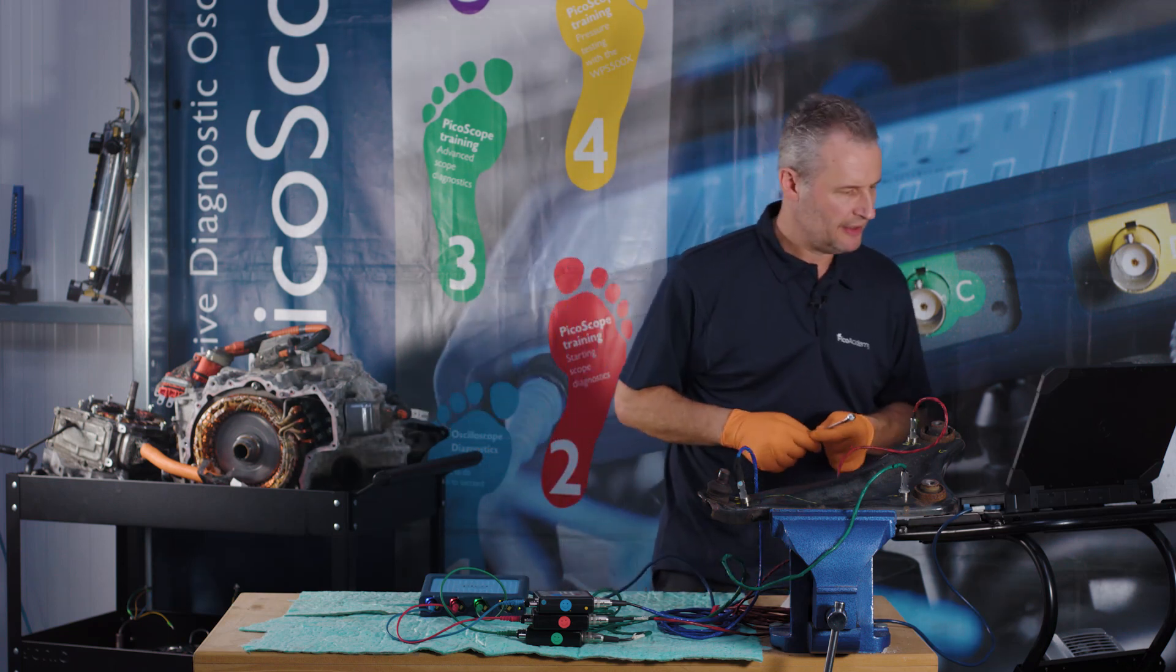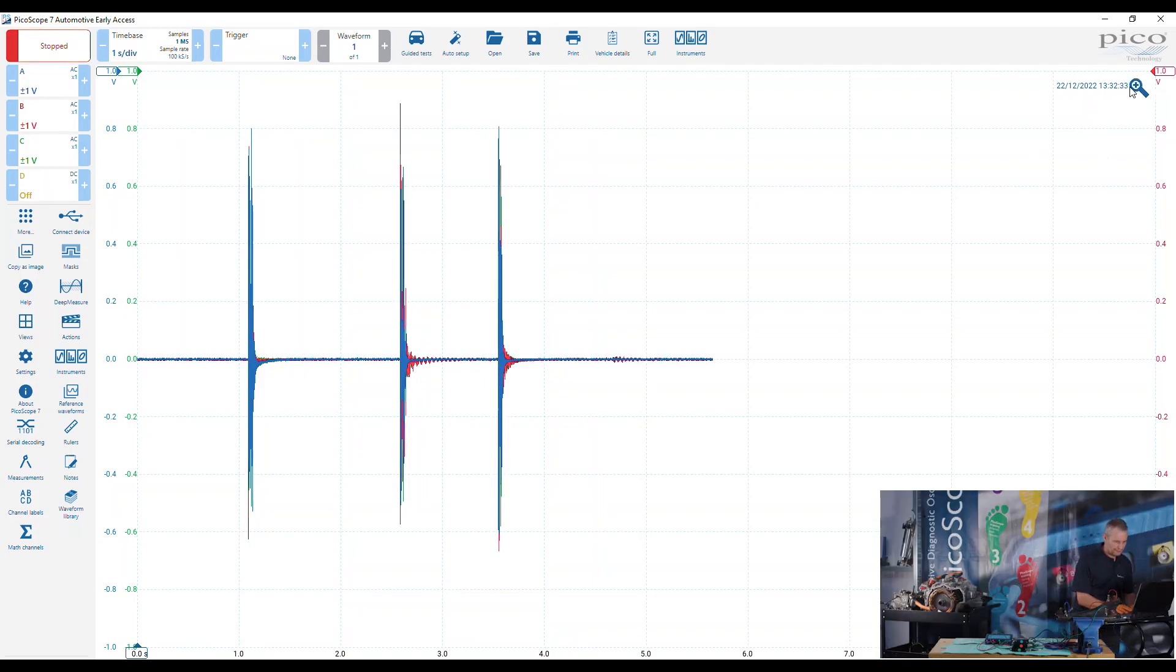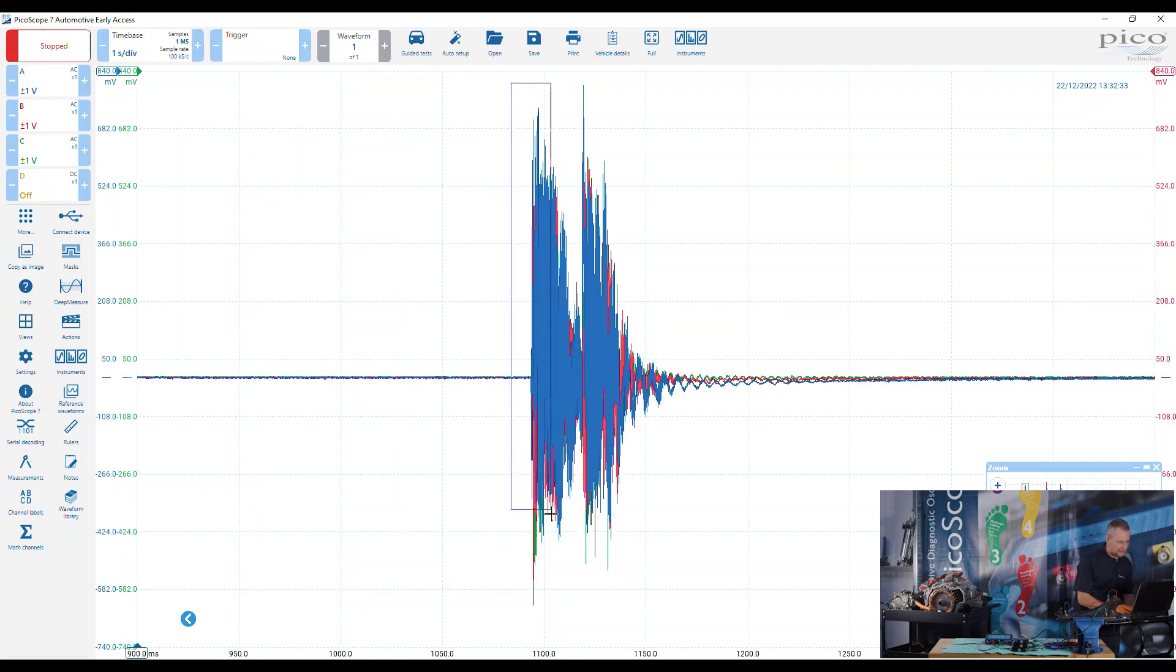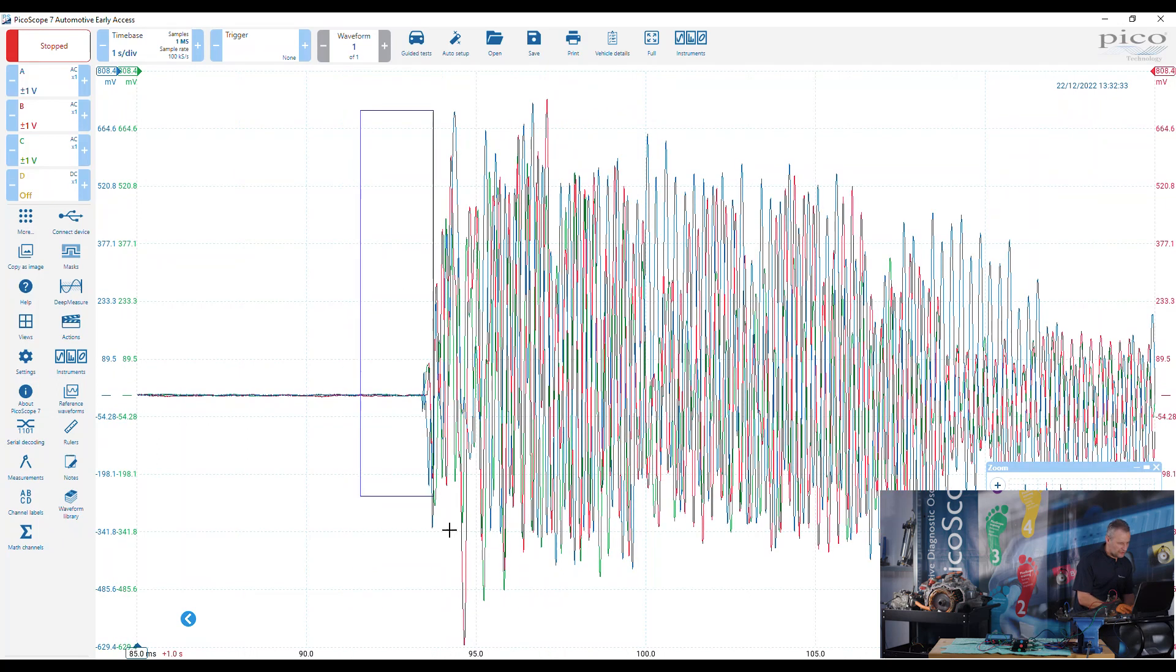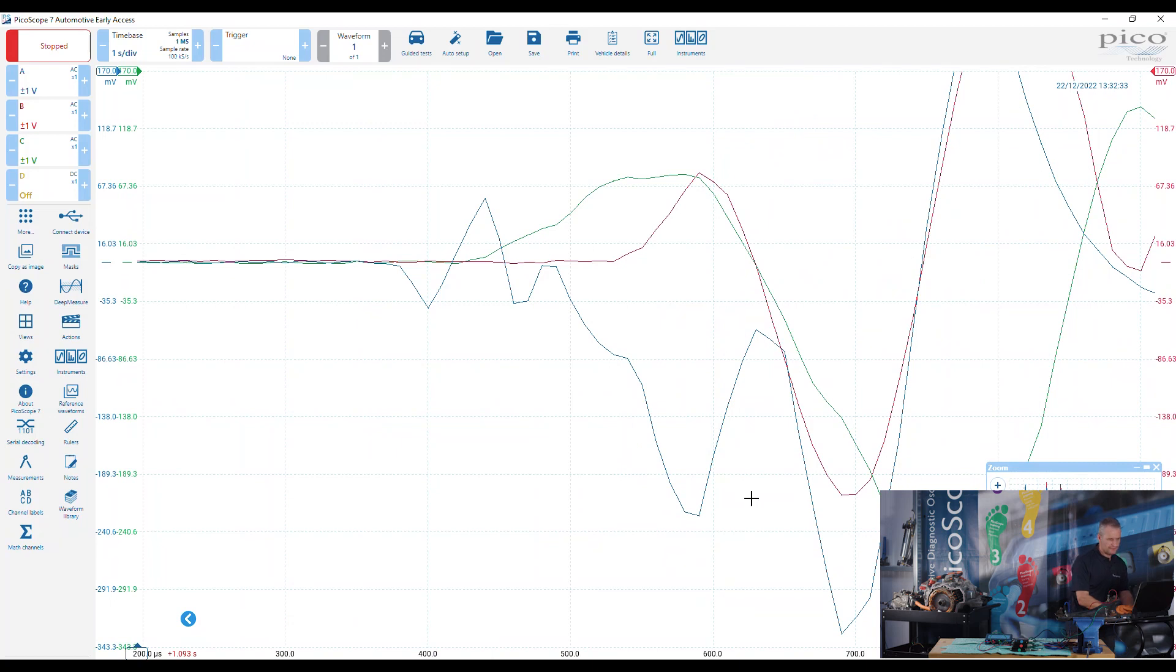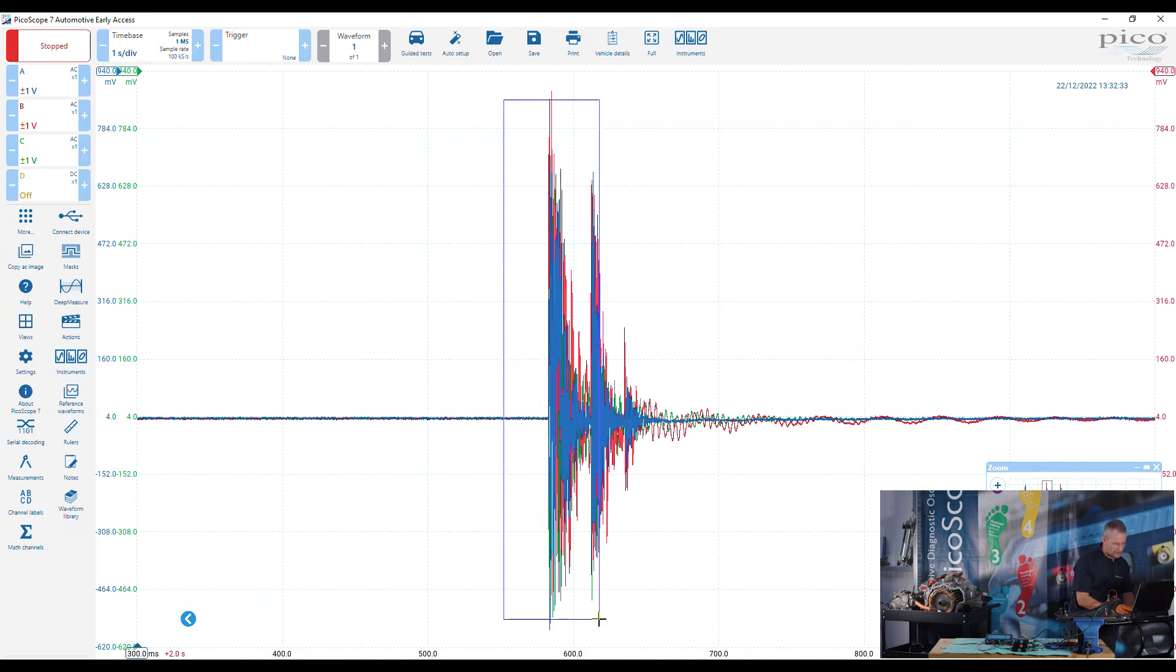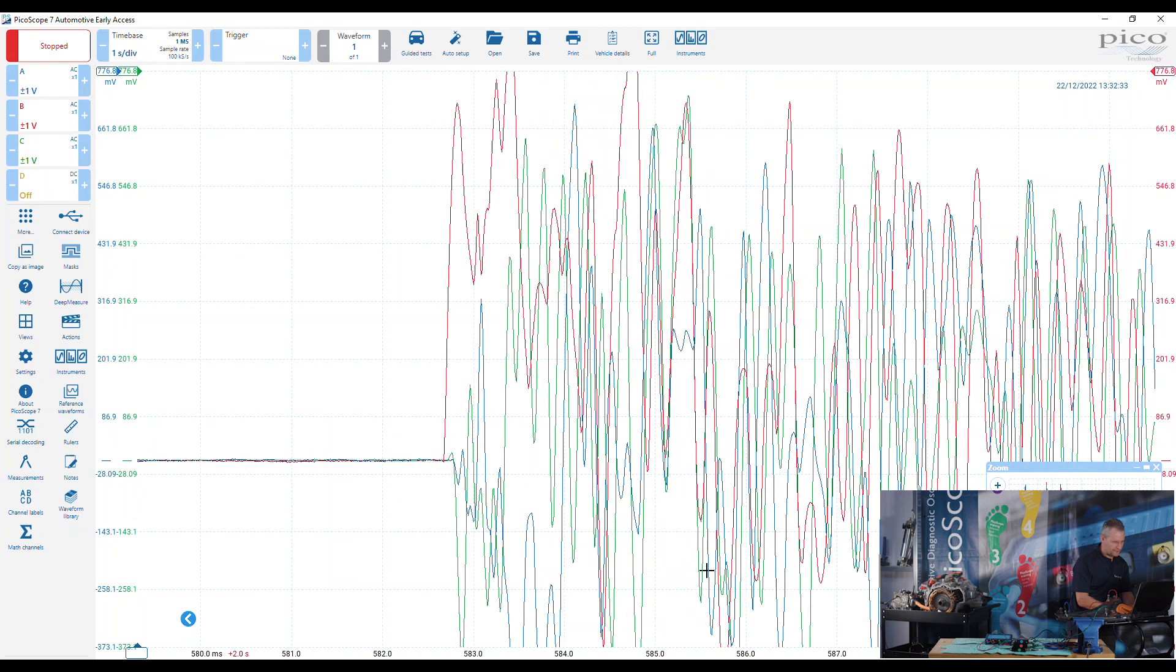We'll run the scope again—channel A, B, C. Pause the software. The first strike was adjacent to accelerometer on channel A which is blue. If we zoom in we can clearly see our first responder there was blue, followed by green and then red. Our next strike was close to red which is channel B. We're not focusing on amplitude, we just want first responder. We can clearly see there is red.